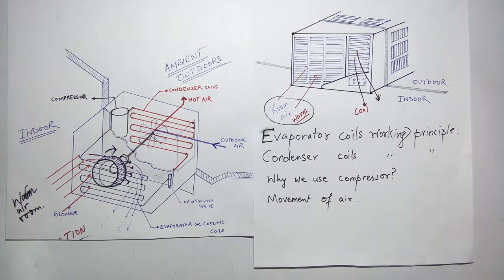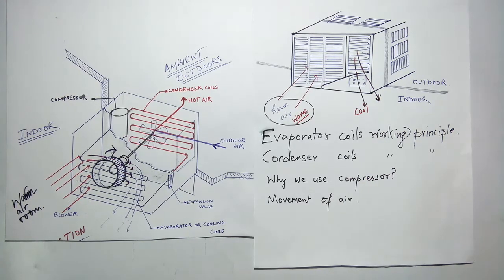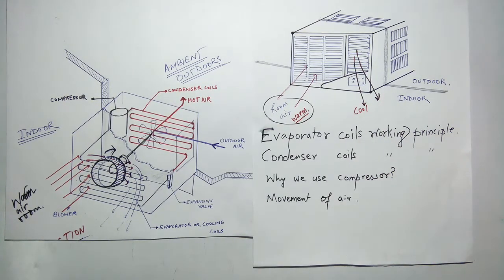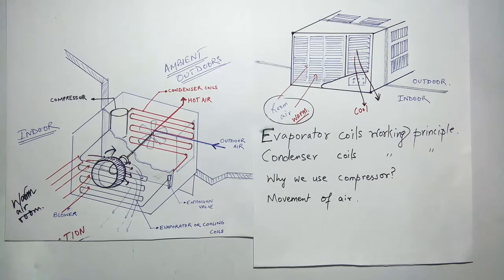Welcome to today's lecture on air conditioning. We will study how room air conditioners work, using a window air conditioner as an example. The working principle of window and split air conditioners is the same — the only difference is in their arrangement. We will cover evaporator coils, condenser coils, the need for a compressor, and the direction of airflow inside the air conditioner.